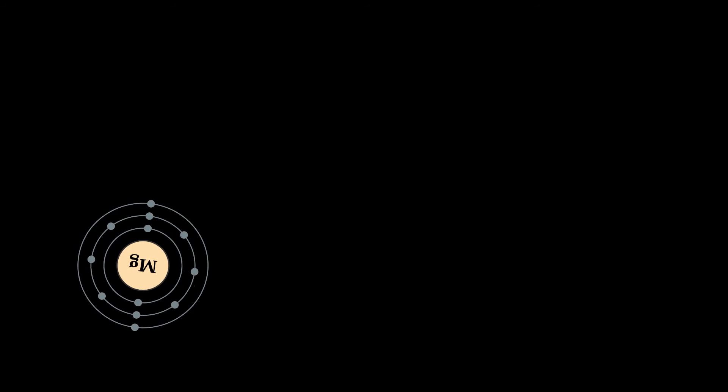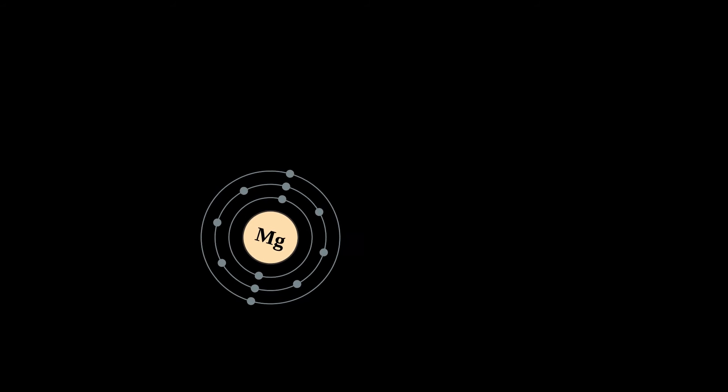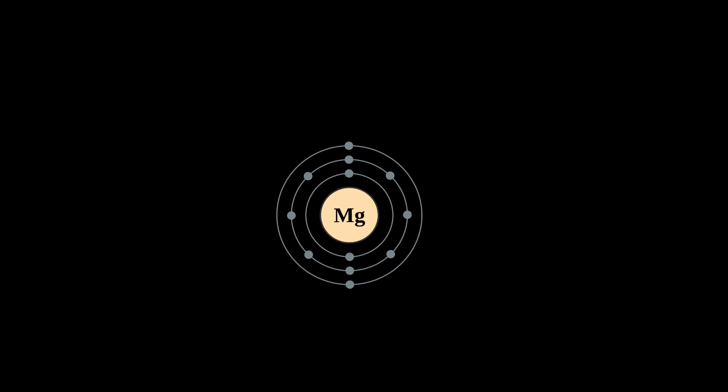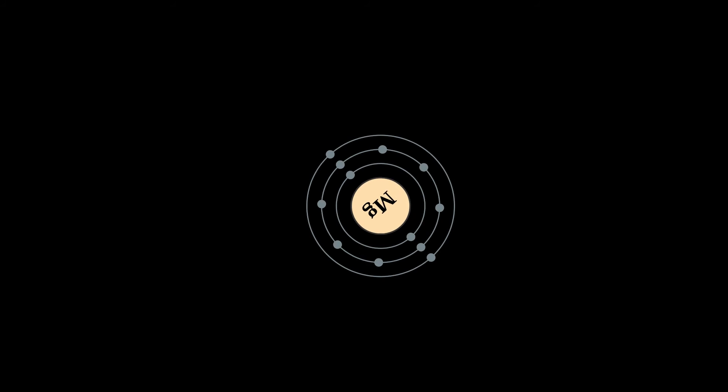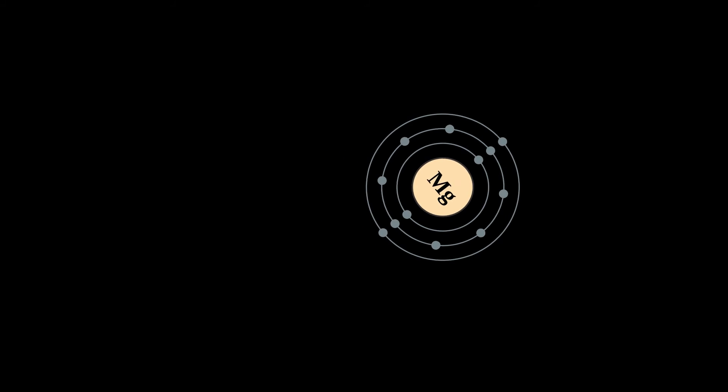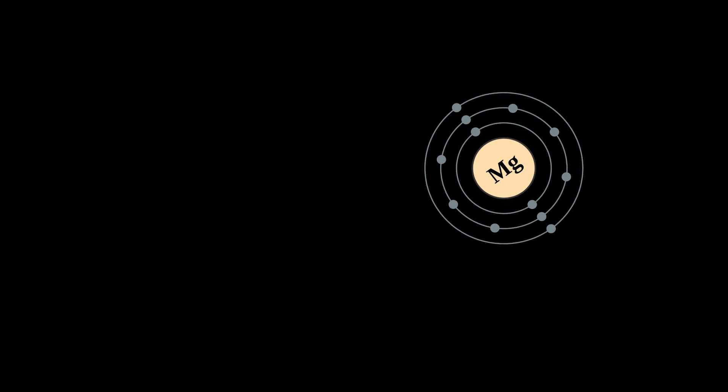The free metal burns with a characteristic brilliant white light. The metal is now obtained mainly by electrolysis of magnesium salts obtained from brine and is used primarily as a component in aluminum-magnesium alloys, sometimes called magnalium or magnolium. Magnesium is less dense than aluminum and the alloy is prized for its combination of lightness and strength.